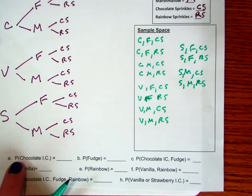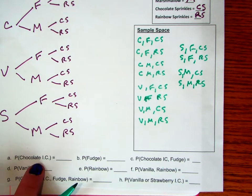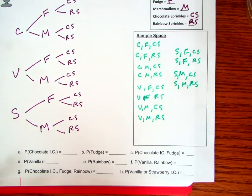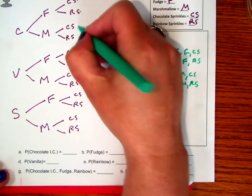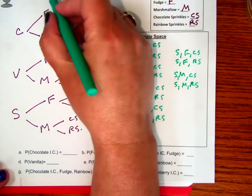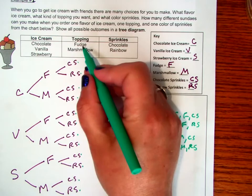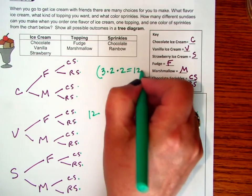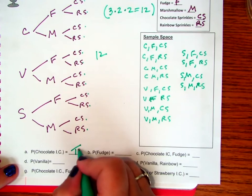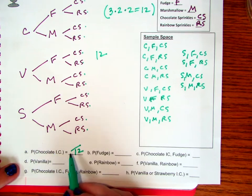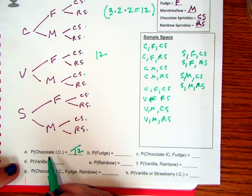My sample space is all of my possible outcomes listed. So in this case I would write them in order, and I can use the tree diagram to guide me. My sample space would be: chocolate, fudge, chocolate sprinkles; chocolate, fudge, rainbow sprinkles; chocolate, marshmallow, chocolate sprinkles; chocolate, marshmallow, rainbow sprinkles; vanilla, fudge, rainbow sprinkles... and so on through all strawberry combinations. So the list of all the outcomes is your sample space — we discussed that before, but we didn't really list them before.